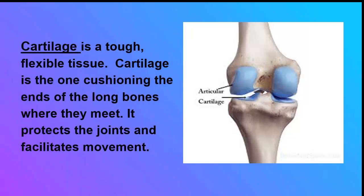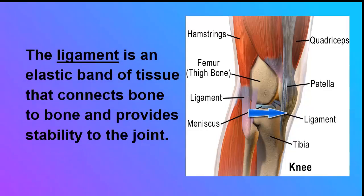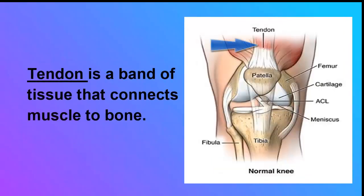Cartilage is a tough, flexible tissue. It cushions the ends of the long bones where they meet, and it protects the joints and facilitates movement. The ligament is an elastic band of tissue that connects bone to bone and provides stability to the joint. Tendon is a band of tissue that connects muscle to the bone.